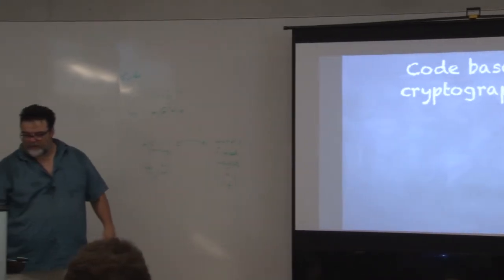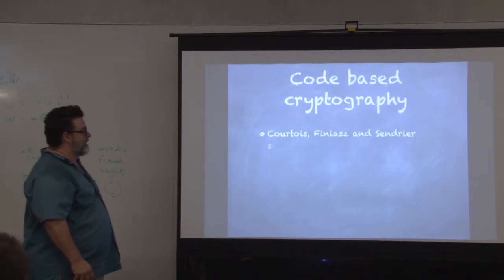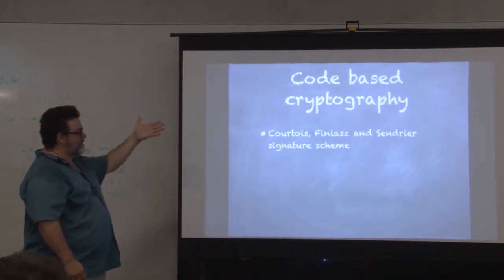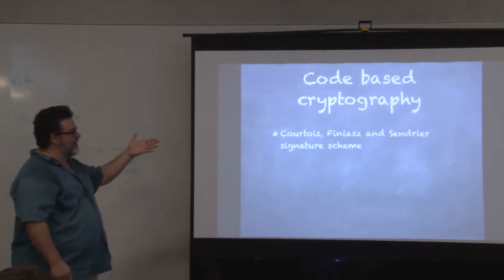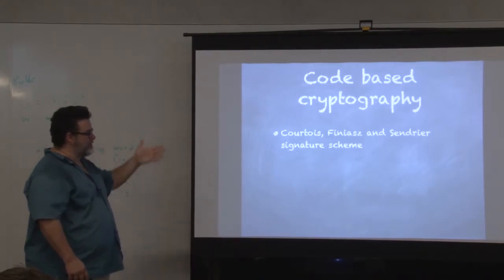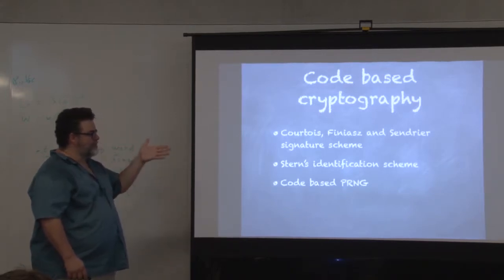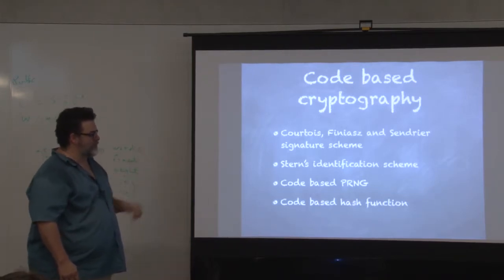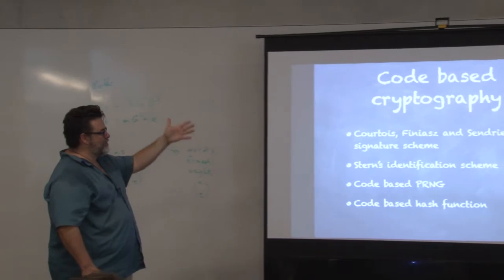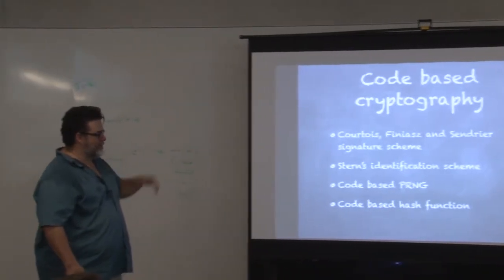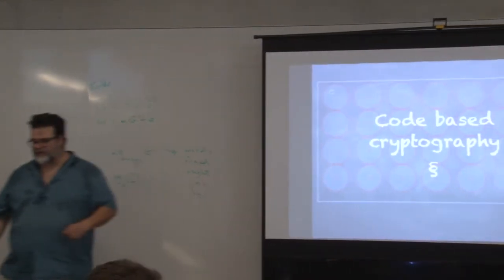However, seeing how many families have been broken is a little scary, and it's not clear that Goppa codes will survive. One last word: in code-based cryptography, beyond encryption schemes there are also signature schemes, one in particular by Courtois, Finiasz, and Sendrier, where they use codes to build a signature scheme. There's an identification scheme by Stern, pseudo-random number generators based on codes, and hash functions based on codes. That concludes what I wanted to say about code-based cryptography.